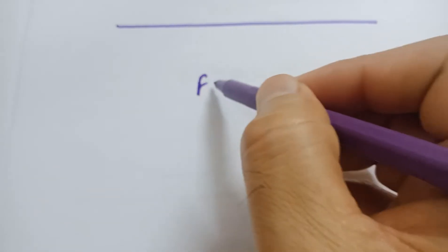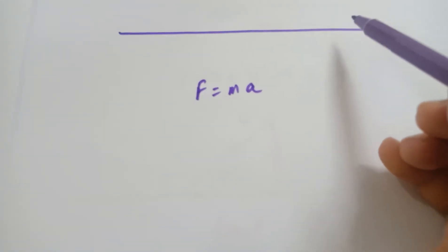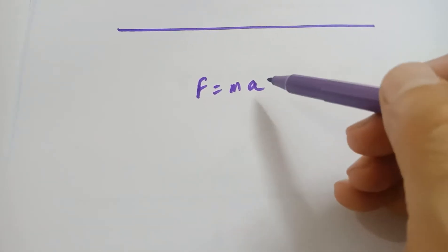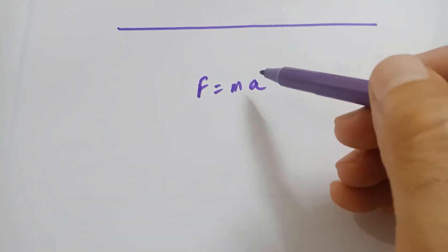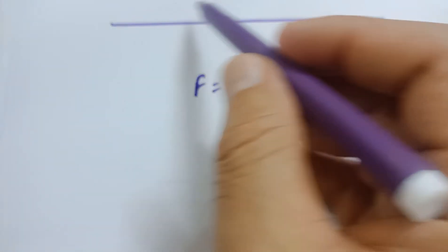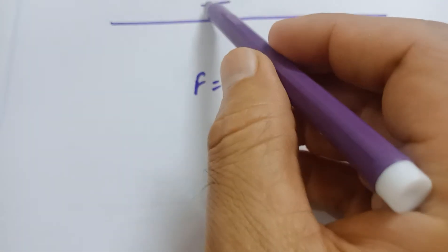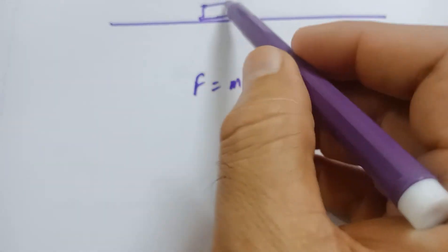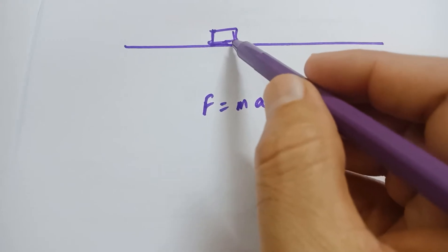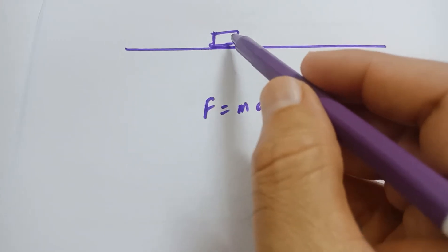Let me take you back to our favorite formula: F = ma. Now do you remember that when an object is moving at a constant speed, what is its acceleration? Acceleration is zero. So when acceleration is zero, that means the resultant of the forces acting on the object is zero.